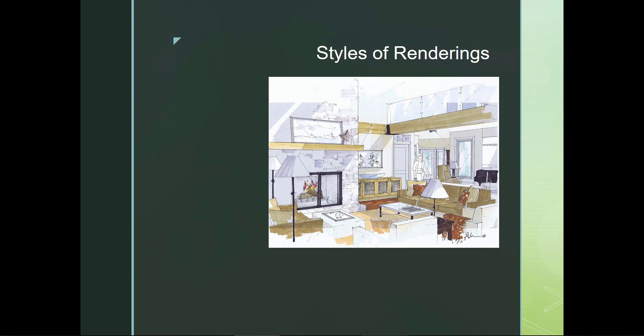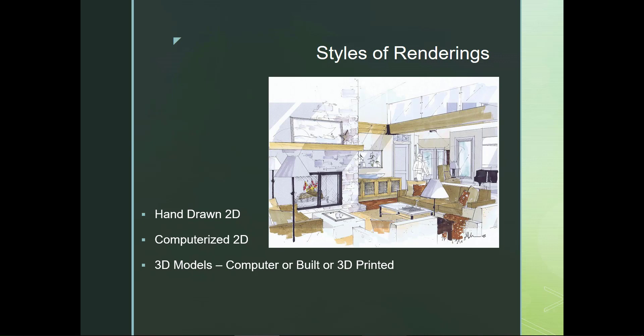When it comes to renderings, it's important to know some of the styles available to you. There's hand-drawn 2D, just like you see in this picture — very simple, elegant but quick renders. There are also computerized two-dimensional drawings using software programs like Photoshop, Illustrator, even SketchUp. There are also 3D models you can create, either through a computer program or a built model using foam core or wood. You can also 3D print models these days — it's pretty fancy what we can do with 3D printers.